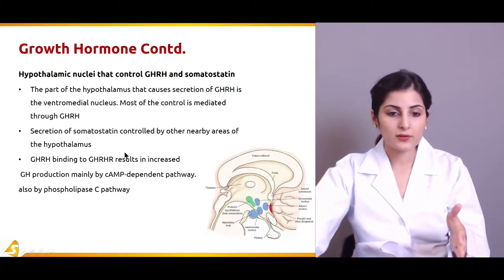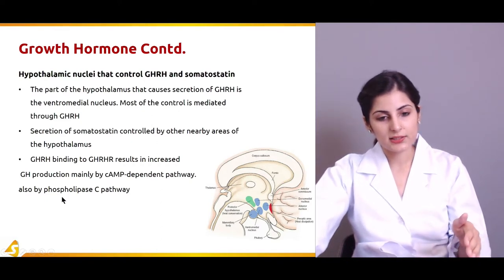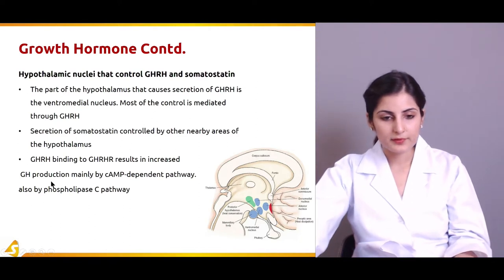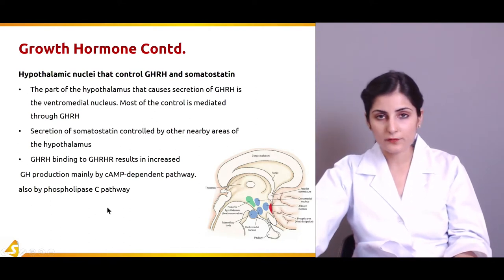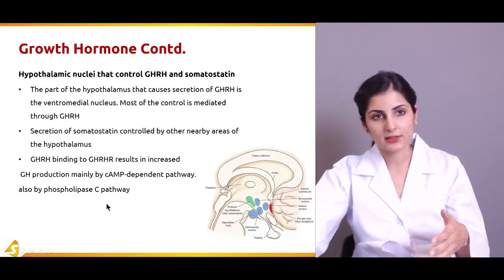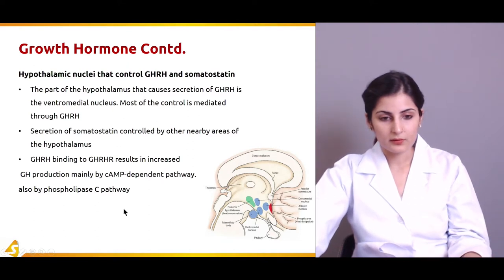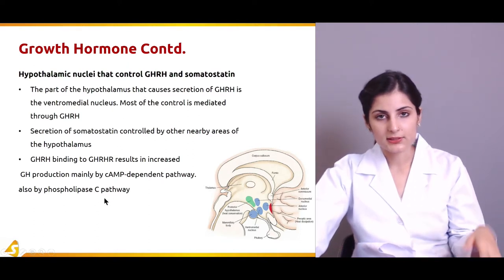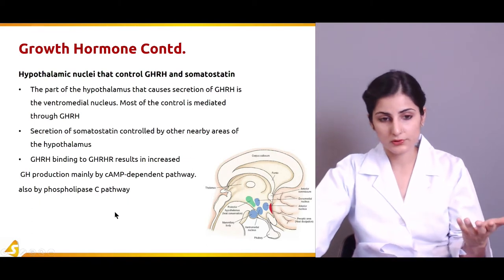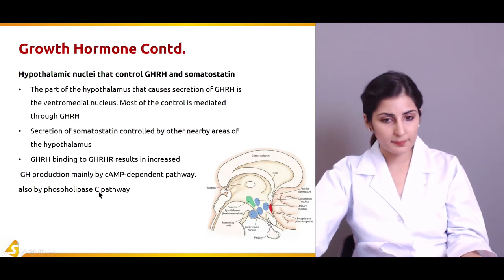Growth hormone is also stimulated by the phospholipase C pathway, in which the enzyme phospholipase causes the breakdown of phospholipids into second messengers that enhance and carry out further events causing the target cells to produce a hormone response. So the two pathways are the cAMP pathway and the phospholipase C second messenger pathway.